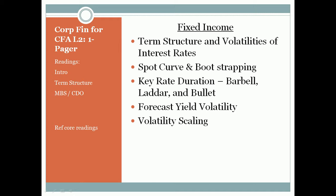We will also need to understand the swap rate curve, also known as the LIBOR rate, and why banks use it instead of the treasury bond rate. The swap rate curve is a series of swap rates quoted by swap dealers with maturities extending to 10 years. After that, we'll cover the theories that explain the shape of the yield curve, then key rate duration, and barbell versus bullet portfolios. Those are the topics we will look at next time.